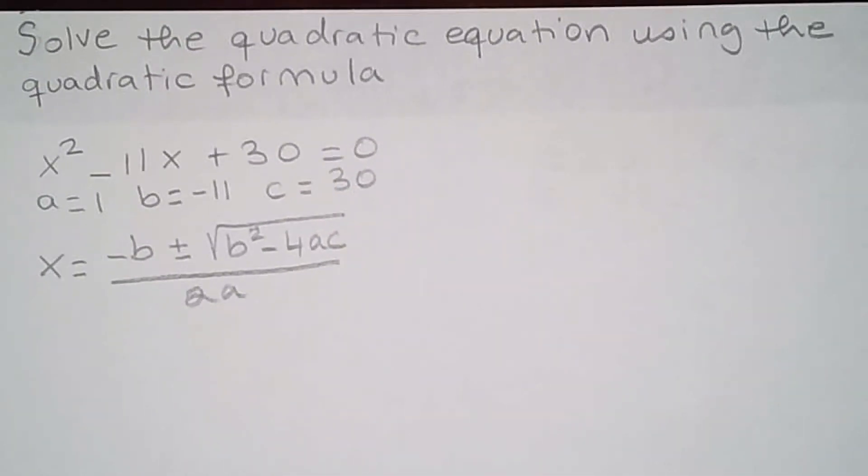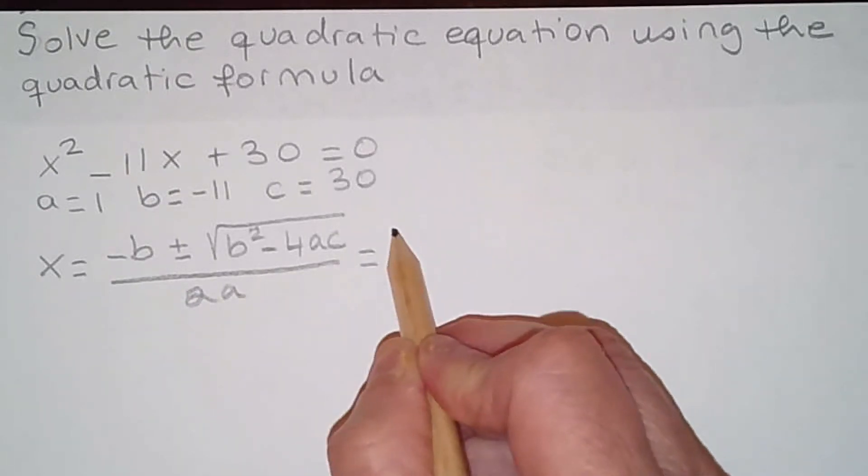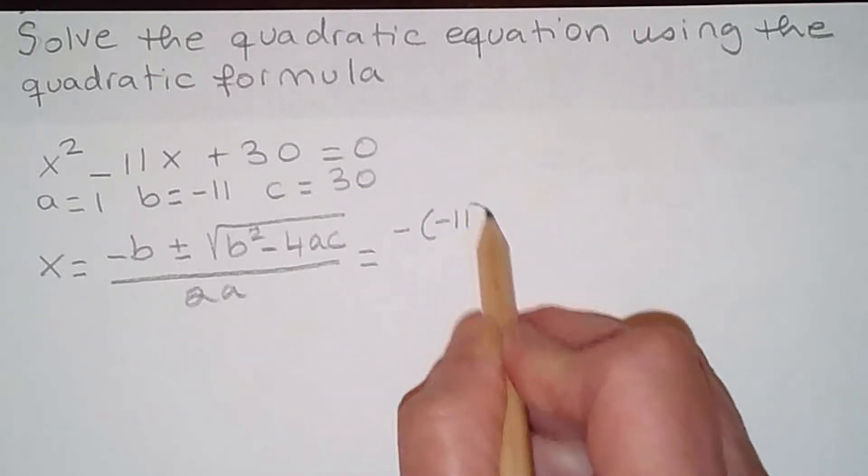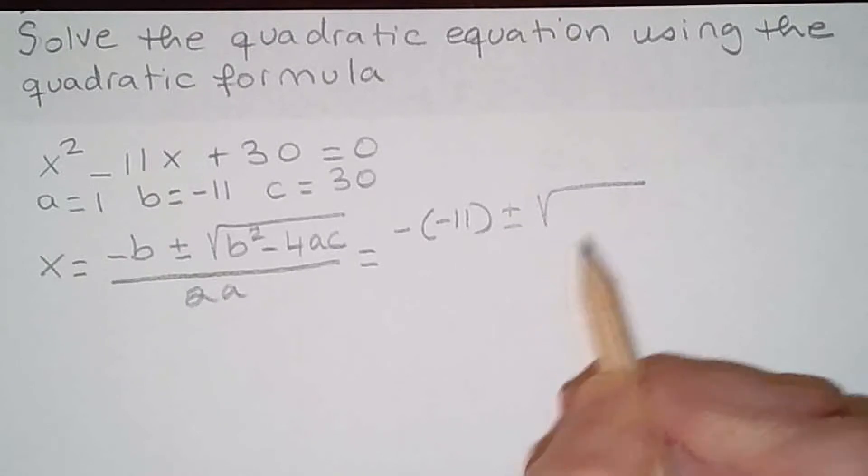Now plug in these numbers in the equation. You're going to get negative b, that's a negative negative 11, plus or minus square root of b squared, that's negative 11 squared...